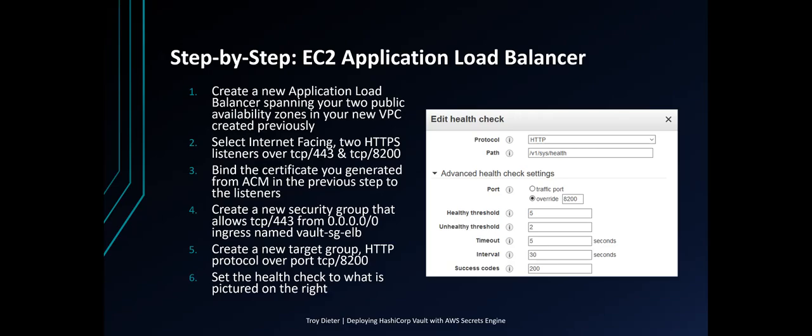Create a new security group that allows TCP 443 from 0.0.0.0/0 (all access) inbound ingress, named 'vault-sg-elb'. Create a new target group — this will allow the target to be set to TCP 8200, which will be for Vault API traffic. Set the health check to '/v1/sys/health' as pictured, which will return an HTTP 200 status code when the health check is clean.